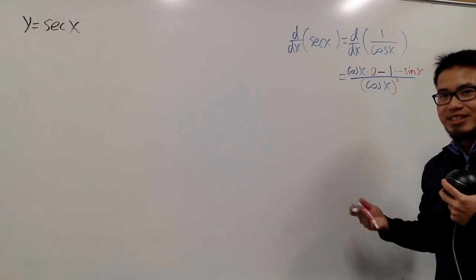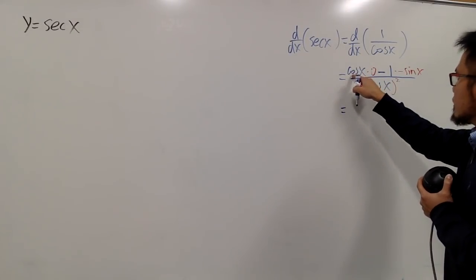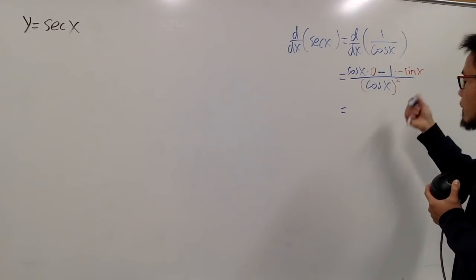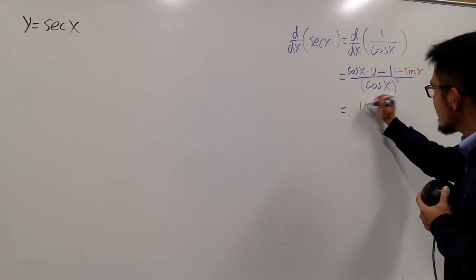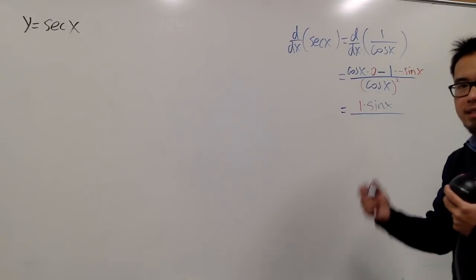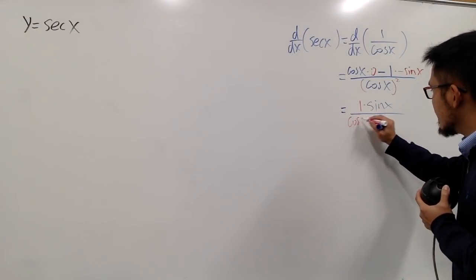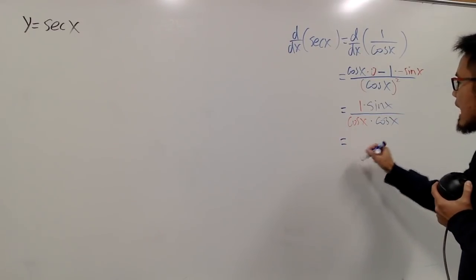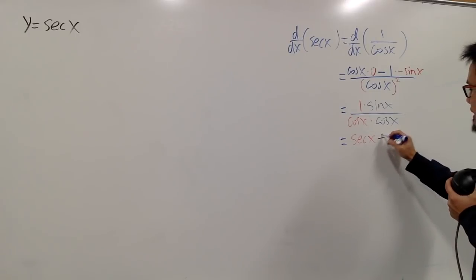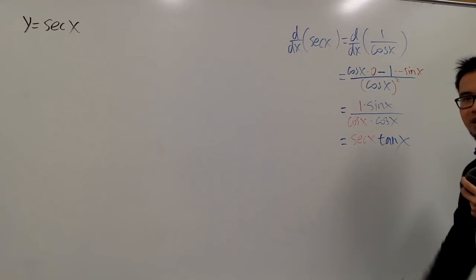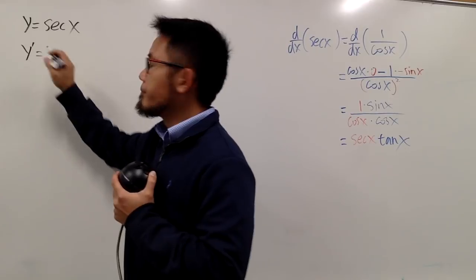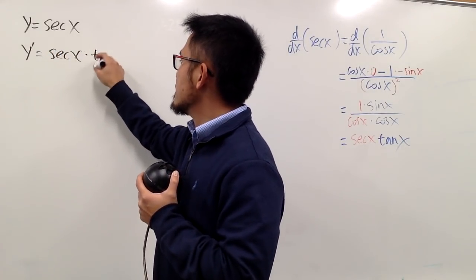The rest is just a matter of simplifying. Cosine x times 0 disappears. Negative 1 times negative sine x is just 1 times sine x — both positive now. Over cosine x squared means cosine x times cosine x. Let me put the first cosine x in red and the second cosine x in blue. Because 1 over cosine x is exactly secant x, times sine x over cosine x, that's exactly tangent x. So the first derivative of secant x — I'll write it as y′ — is equal to secant x times tangent x.